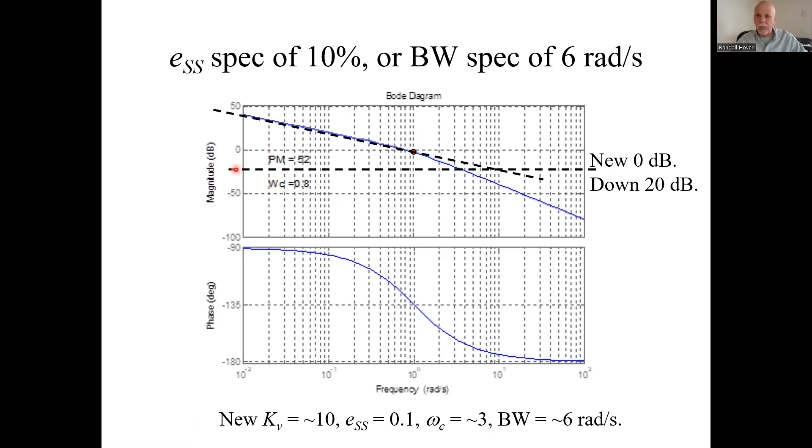This is the new reference line, the new zero dB. So that 20 dB above it is this line here, and that's 20 dB or 10. That gives us our steady state error of 10%. Let's see. Where does it cross that reference line? I hear it about somewhere around three, three radians per second.